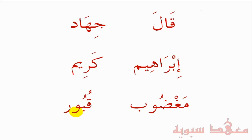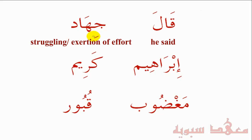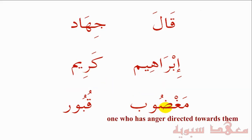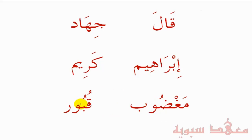There is another Mad, which is when two Hamzas come together, but it would be more appropriate to mention that when we get to the introduction to Arabic grammar. Finally, to translate these words: 'Qala' means 'he said'; 'Jihad' denotes the action of struggling and exerting effort; 'Ibrahim' is the Arabic name for Prophet Abraham, peace be upon him; 'Kareem' means one who is generous; 'Magdoub' denotes somebody who is the object of anger; and 'Qubur' is the plural of 'Qabr', which means grave — so 'Qubur' means graves.